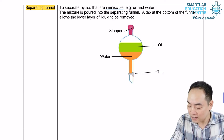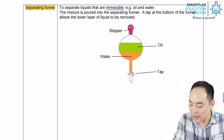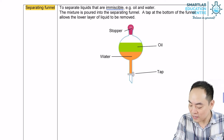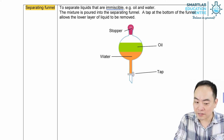Place another beaker below the funnel. Open the tap of the funnel again to allow the top oil layer to drain into the beaker.